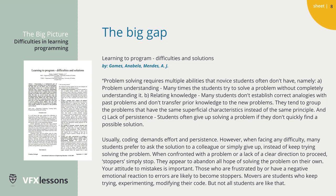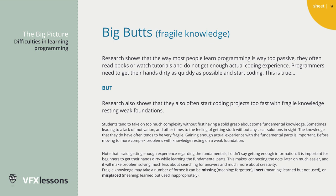Even after incorporating research on learning programming effectively, there are still a few huge contradictions with a high probability of becoming obstacles. Research shows that the way most people learn programming is way too passive — they often read books or watch tutorials and don't get enough actual coding experience. Programmers need to get their hands dirty as quickly as possible and start coding. But research also shows that they often start coding projects too fast with fragile knowledge resting on weak foundations.